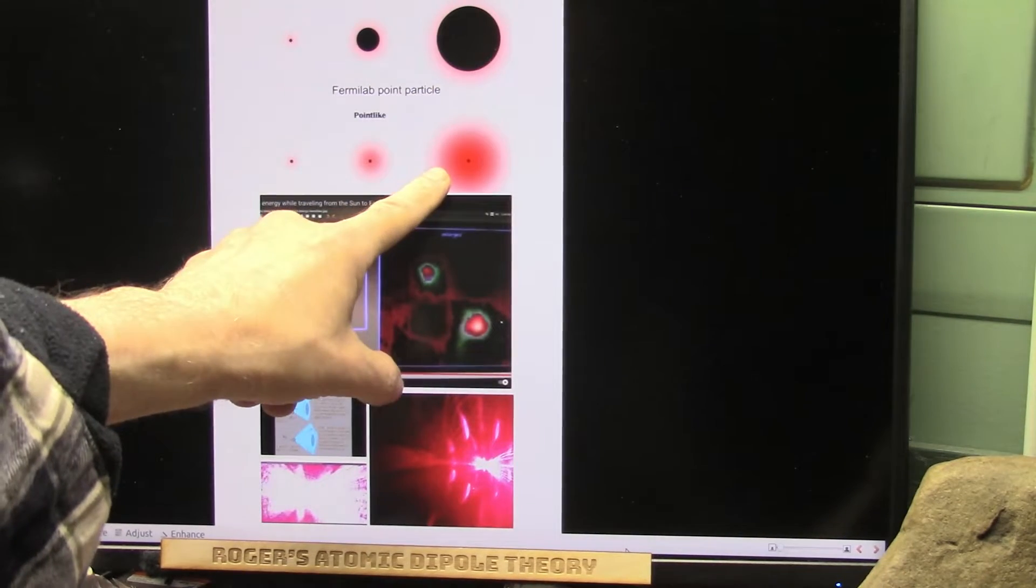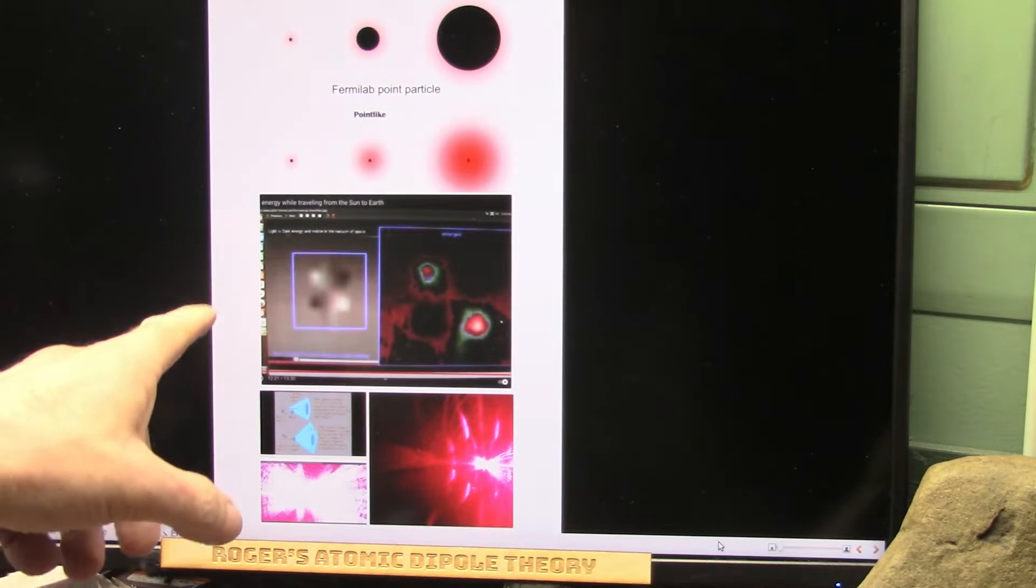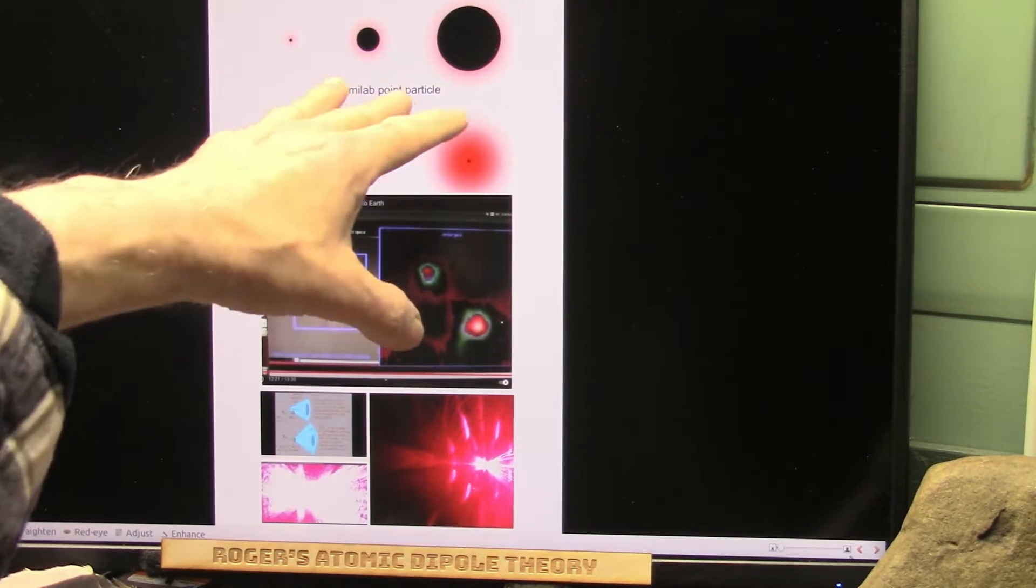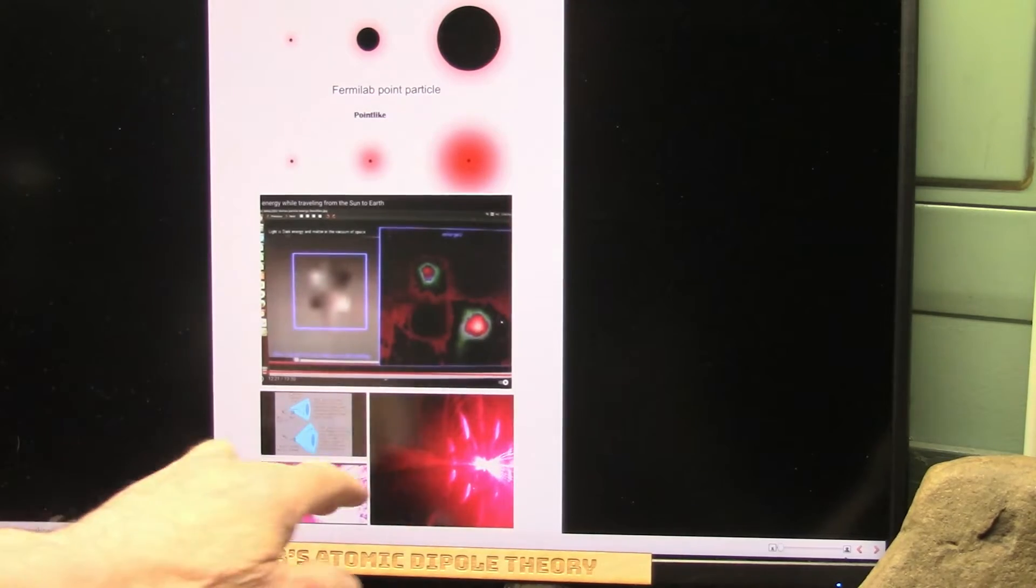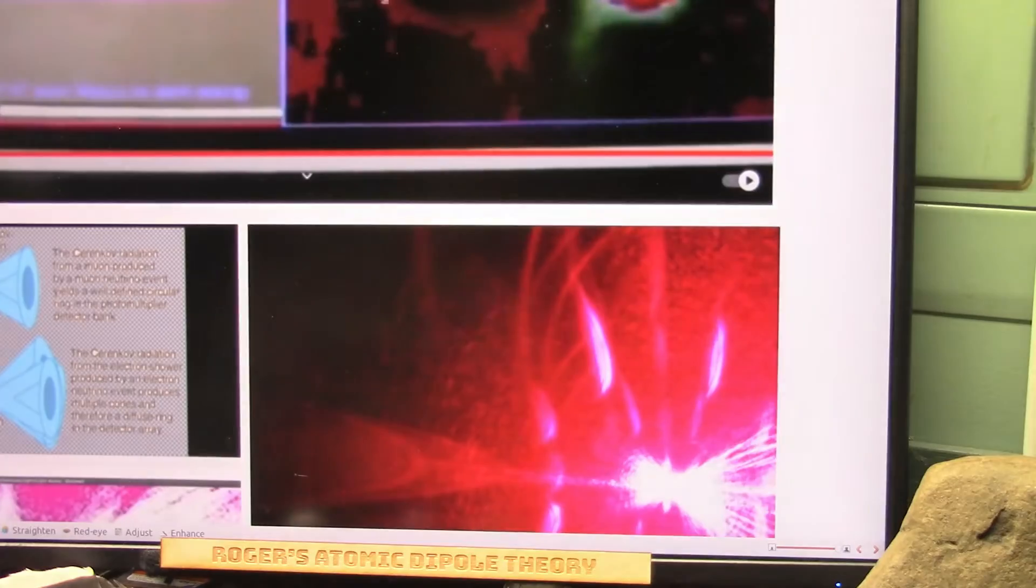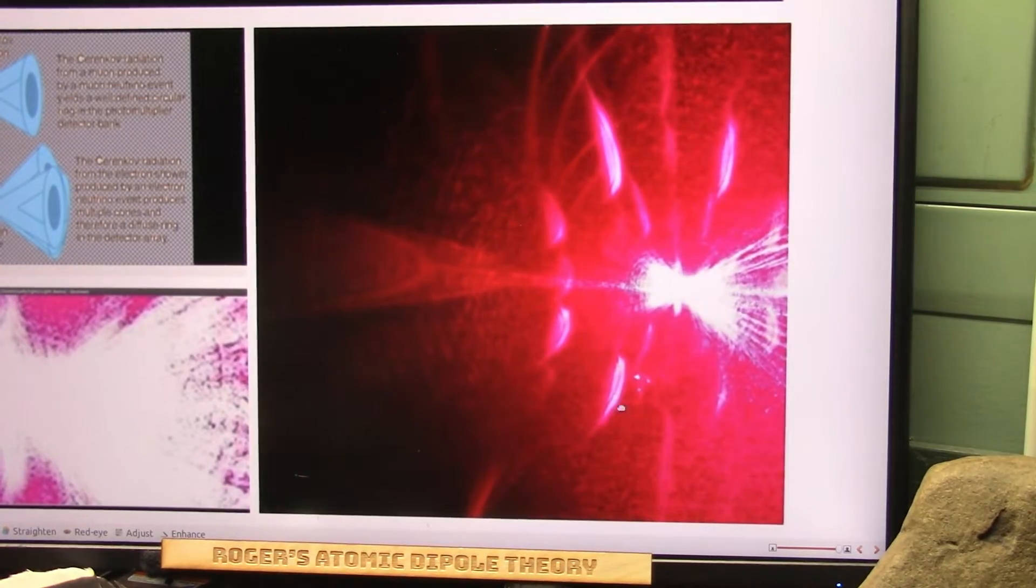This one's a fixed particle. This is a point particle. I'll show you Don Lincoln's article in a second. This is what we found in light experiments. We didn't use protons. We used light. And we focused it through a venturi.